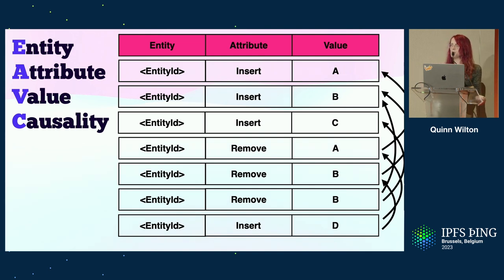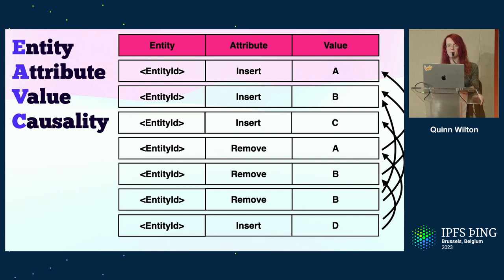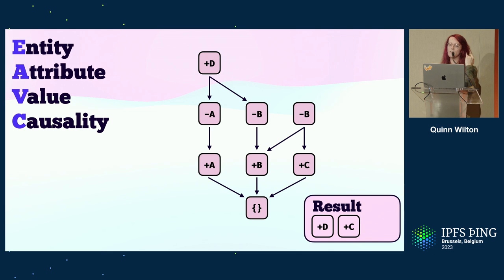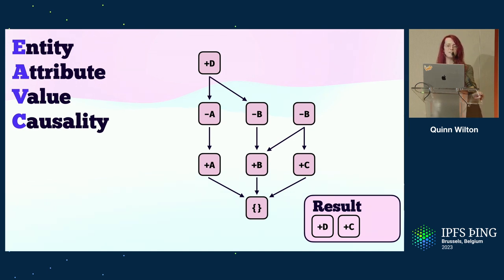Because we use content IDs, these dependencies are guaranteed to be acyclic, and so we can visualize the database in a form we should be more familiar with: a directed acyclic graph. Thanks to the CALM principle, by using a query language inspired by Datalog, we can traverse this graph and interpret its structure as an eventually consistent CRDT. In this case it can be viewed as an observer-remove set containing the letters D and C.